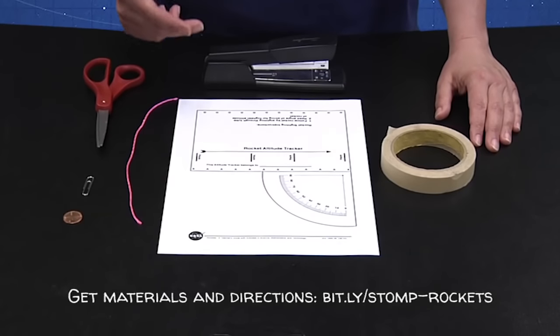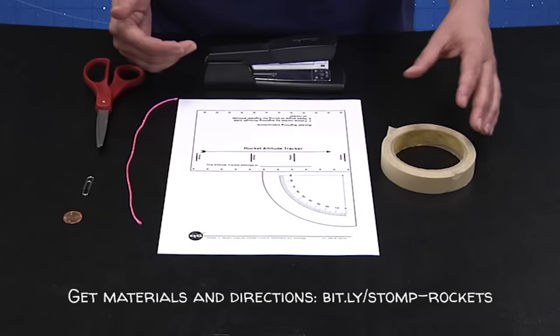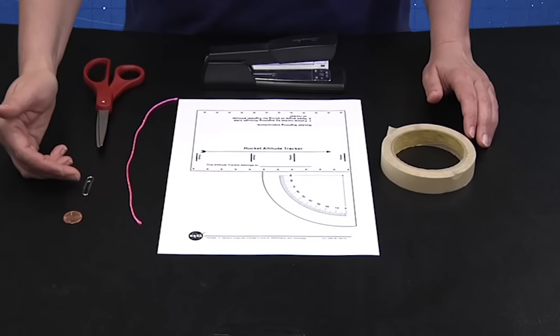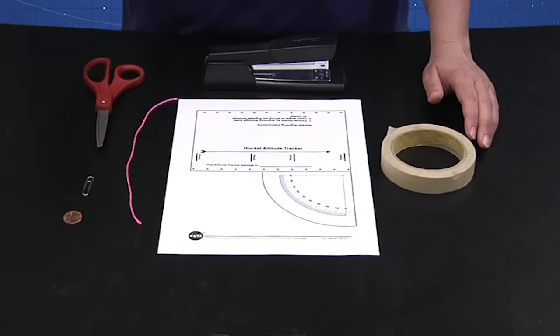To make the altitude tracker, you'll need the altitude tracker template, a stapler, some tape, a piece of string, scissors, a paper clip, and a penny or some other sort of weight.